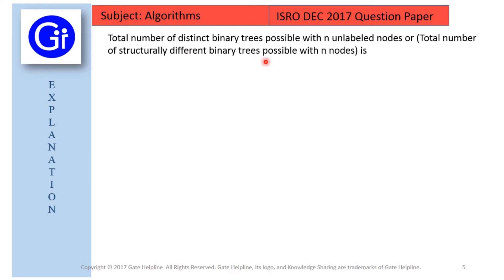We use these two formulas to calculate these: 2nCn upon n plus 1, or 2n factorial upon n plus 1 factorial into n factorial.